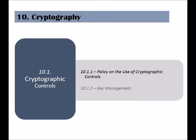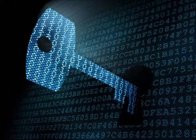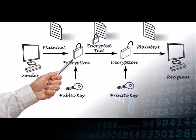The first control is called Policy on the Use of Cryptographic Controls. The organization should establish and develop a policy that defines how the organization uses cryptographic and encryption controls, and to what extent cryptography and encryption are a necessary measure to protect stored and transmitted data.